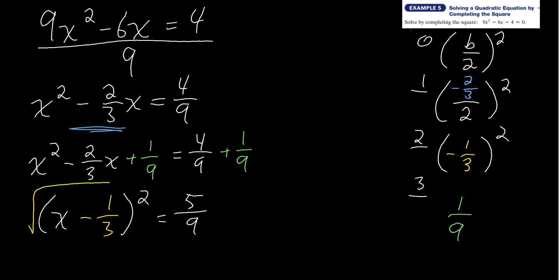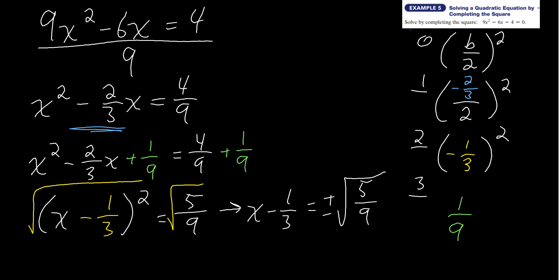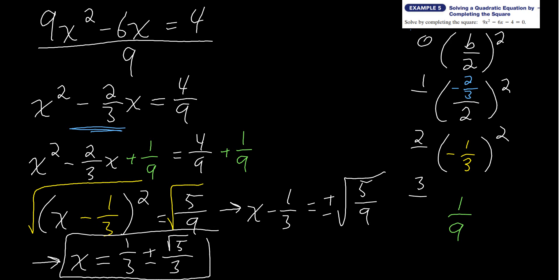Taking the square root of both sides: x minus 1/3 equals plus or minus the square root of 5/9. Since we can take the square root of the top and the square root of the bottom separately: square root of 5 over square root of 9, which is 3. Adding 1/3 to both sides: x equals 1/3 plus or minus the square root of 5 over 3.